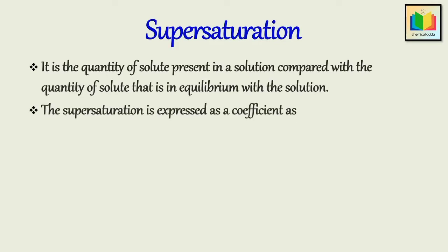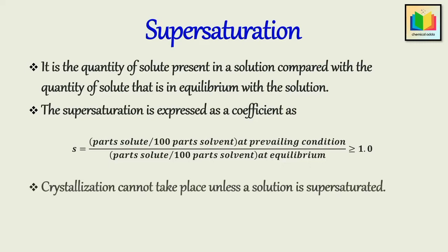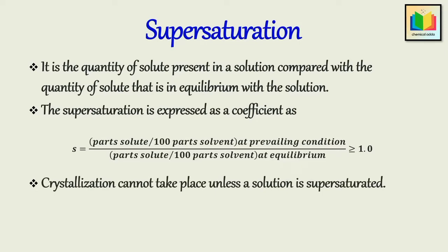Supersaturation is expressed as a coefficient: S = (parts solute / 100 parts solvent at prevailing condition) divided by (parts solute / 100 parts solvent at equilibrium), and S must be greater than or equal to 1. Unless a solution is supersaturated, crystallization cannot take place — crystals can neither form nor grow without supersaturation. The amount of crystals formed depends upon the difference in saturation concentration, since once crystallization begins, the extra solute due to supersaturation comes out of solution in the form of crystals.